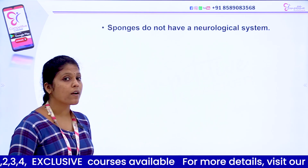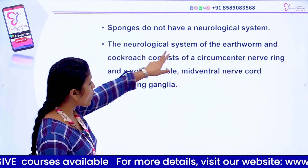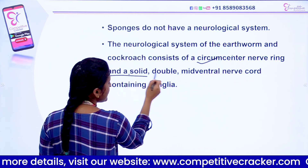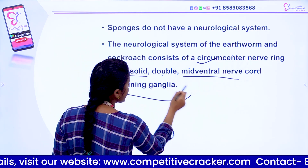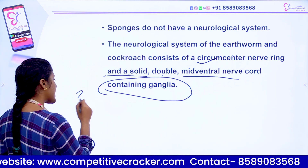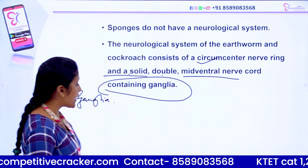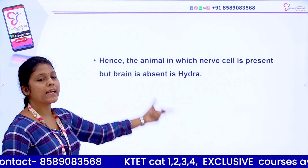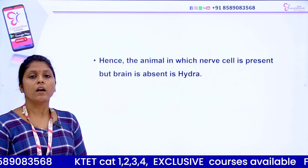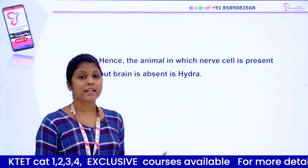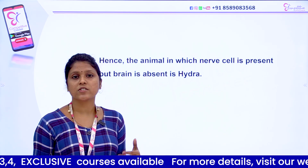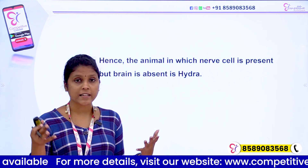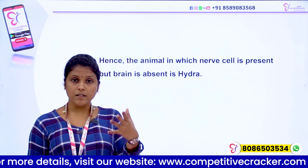Sponges do not have a neurological system. The nervous system of Hydra is a nerve net. Hydra has a highly developed nerve cell structure but lacks the brain. So Hydra has nerve cells but they are lacking the brain.